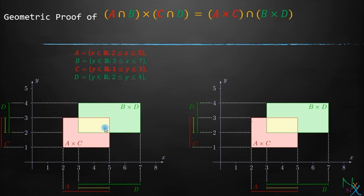One by one let us draw on the Cartesian plane. We have already seen that A intersection B is represented by this yellow colored line and C intersection D is represented by this yellow colored line.